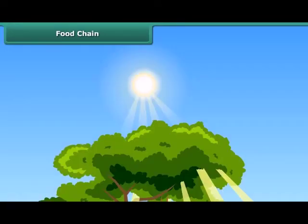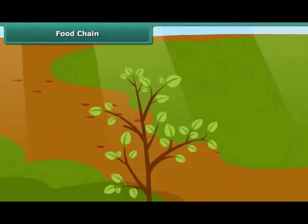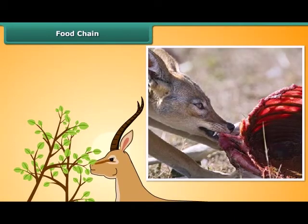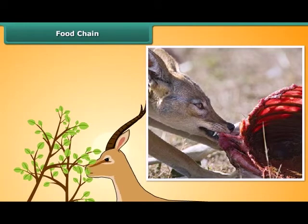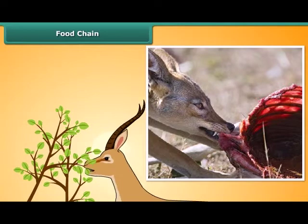The sun is the principal source of energy. The plants are the producers as they manufacture their own food with the help of sunlight. The animals are the consumers. Animals can be plant-eating herbivores or flesh-eating carnivores, or omnivores consuming both plants and other animals. Scavengers feed on dead animals.